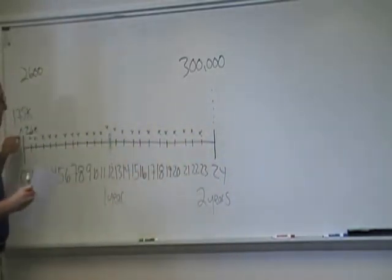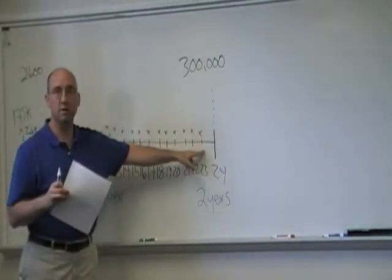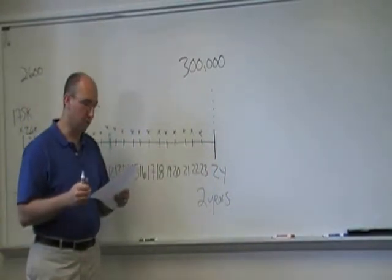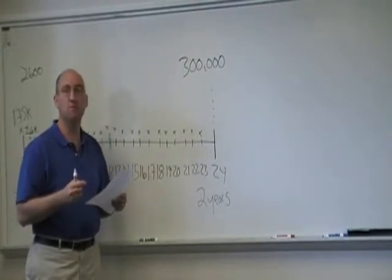If she makes her first payment today at time zero and then makes monthly payments with her last in one year, 11 months, that's 24 payments. We also know it's 24 because it says she plans to save $2,600 per month for two years.